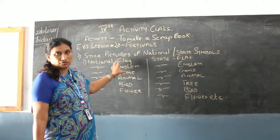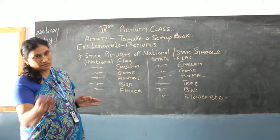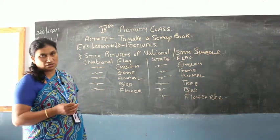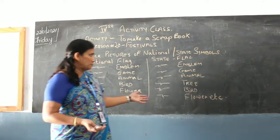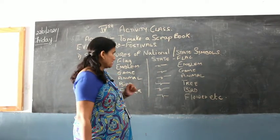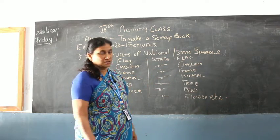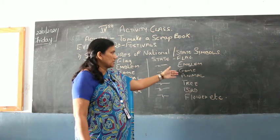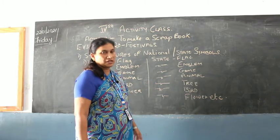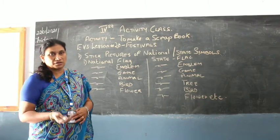Once you finish the national symbols, turn over the page and start sticking pictures for the state symbols. You can stick the Karnataka state flag, the emblem, the state game, the state animal, the state tree, the state bird, the state flower, etc. If you don't know these, please Google it and you will find pictures.